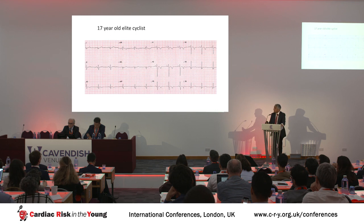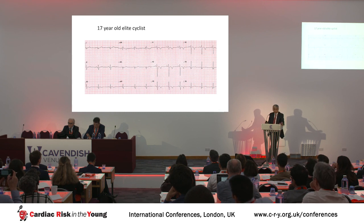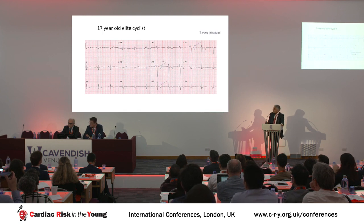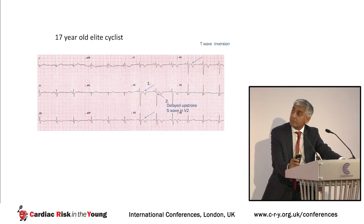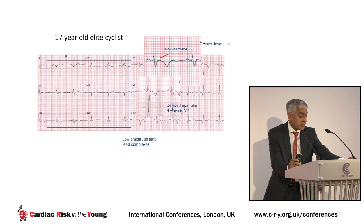As an example, a 17-year-old elite cyclist shares with ARVC the finding of T wave inversion in V1 to V4, but additionally has a delayed upstroke of the S wave in V2, an epsilon wave, and small QRS complexes in the limb leads — all features pointing toward ARVC rather than a normal athletic variant.